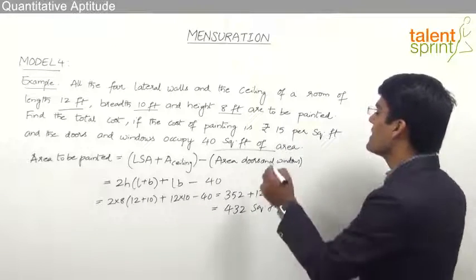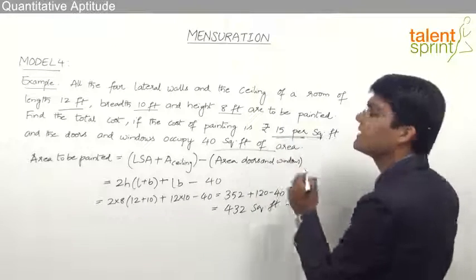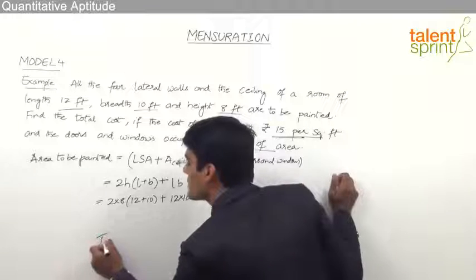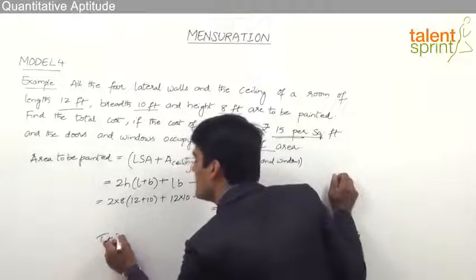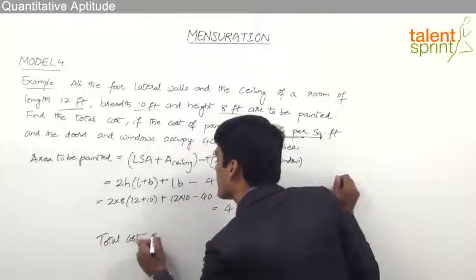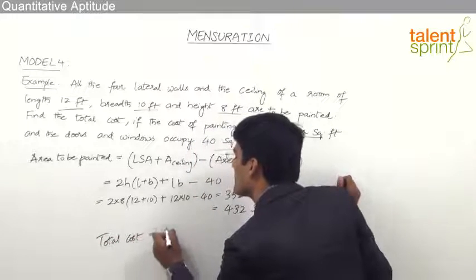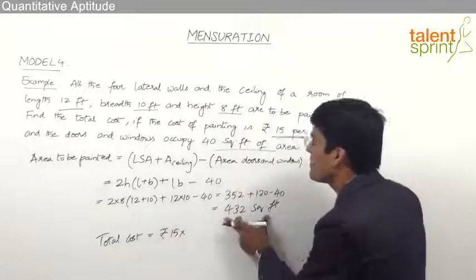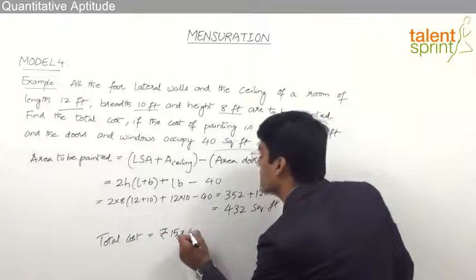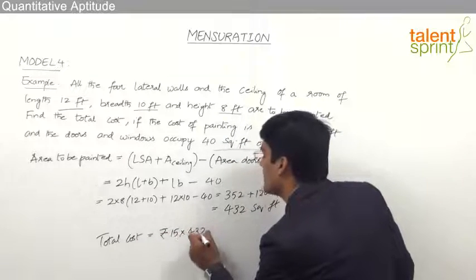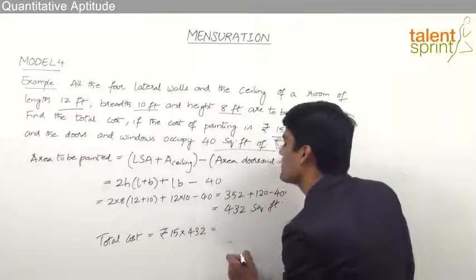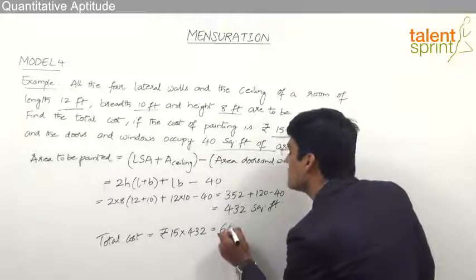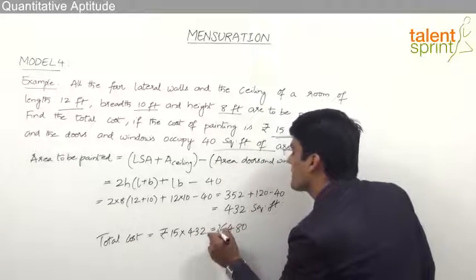The cost of painting is Rs 15 per square feet. So the total cost of painting is Rs 15 per square feet multiplied by the number of square feet to be painted, which is 432. This comes out to be Rs 6480.